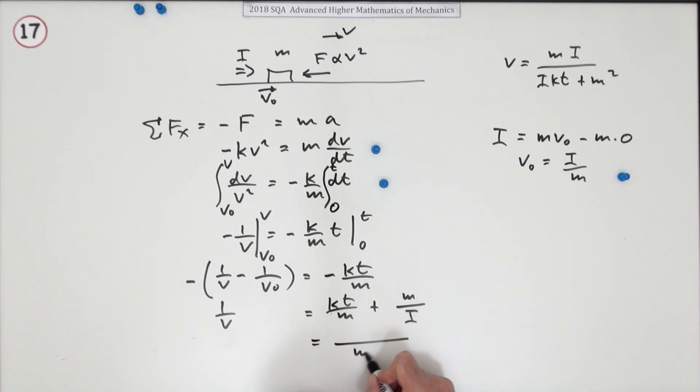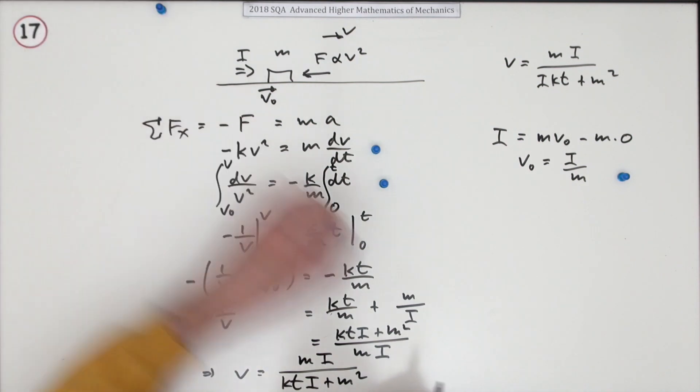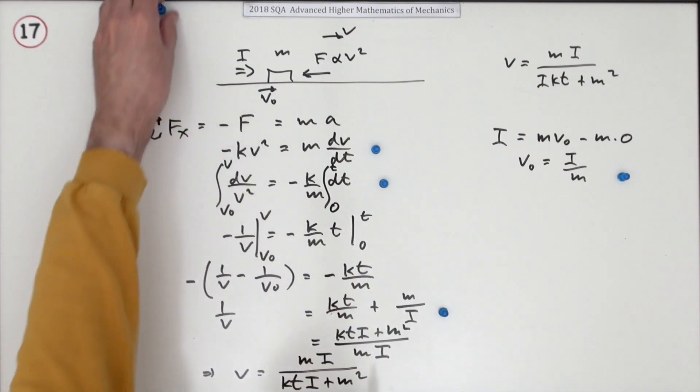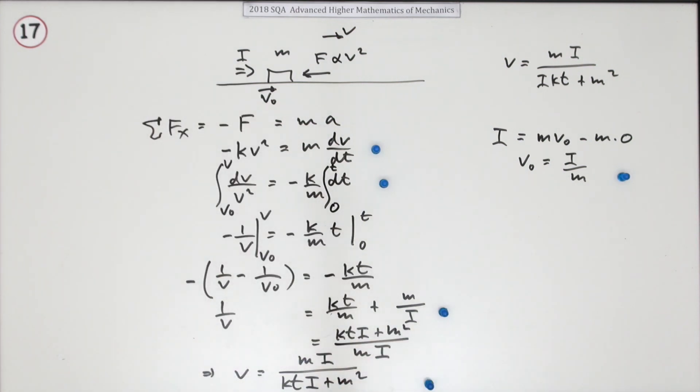Add these two together. So common denominator, M I. So the I needs to multiply this, so that's K T times I. The M has to multiply that, so that's M squared. And finally, flip them over. M I goes on top, and K T I plus M squared goes underneath.